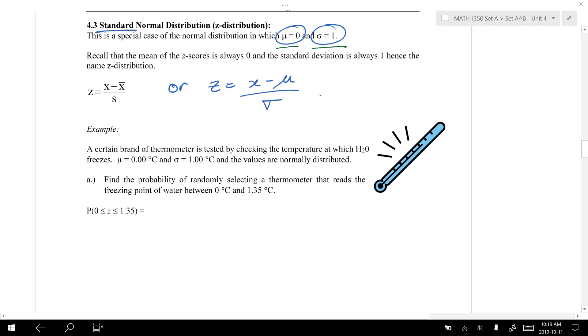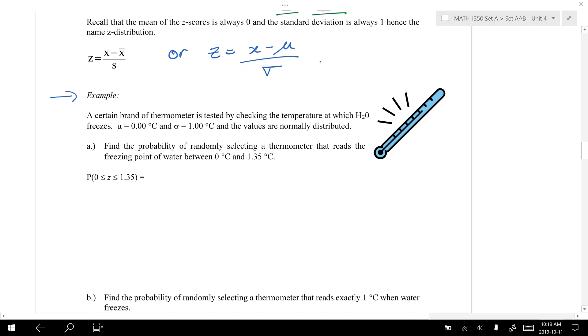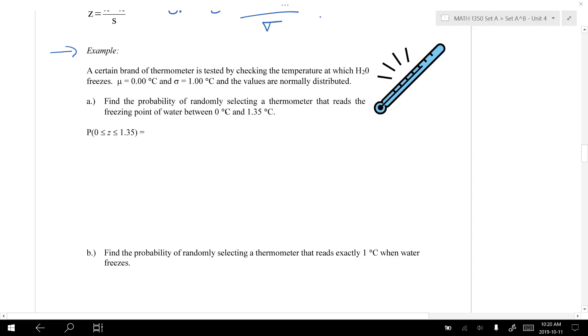So let's consider maybe the standard normal distribution. So this is a normal distribution with mean 0 and standard deviation 1. A good example for this is temperature. So let's consider a certain brand of thermometer. Maybe the average freezing point for all of our thermometers is 0 and the standard deviation is 1. And let's assume that all of our thermometers are normally distributed around this mean. We can ask questions like what is the probability of randomly selecting a thermometer that's reading between the freezing point 0 and this higher temperature 1.35 degrees.